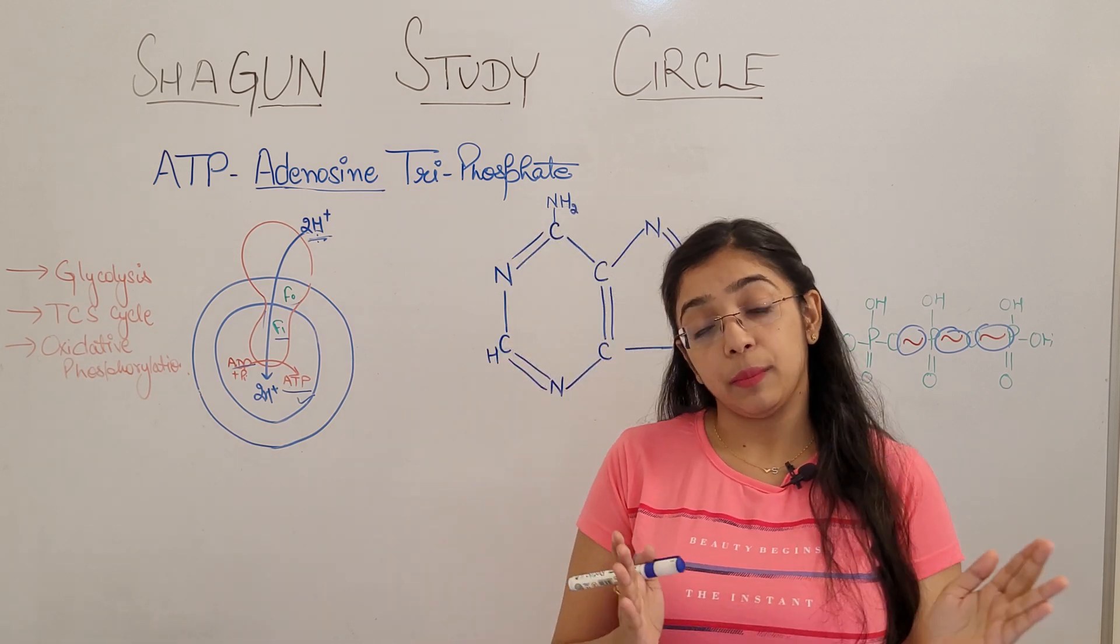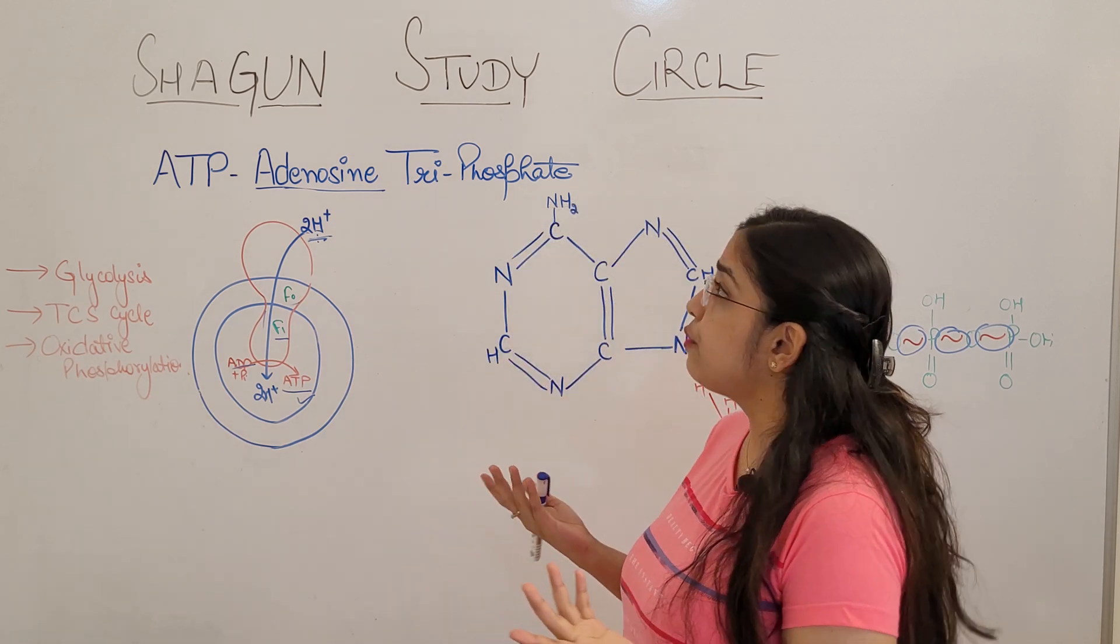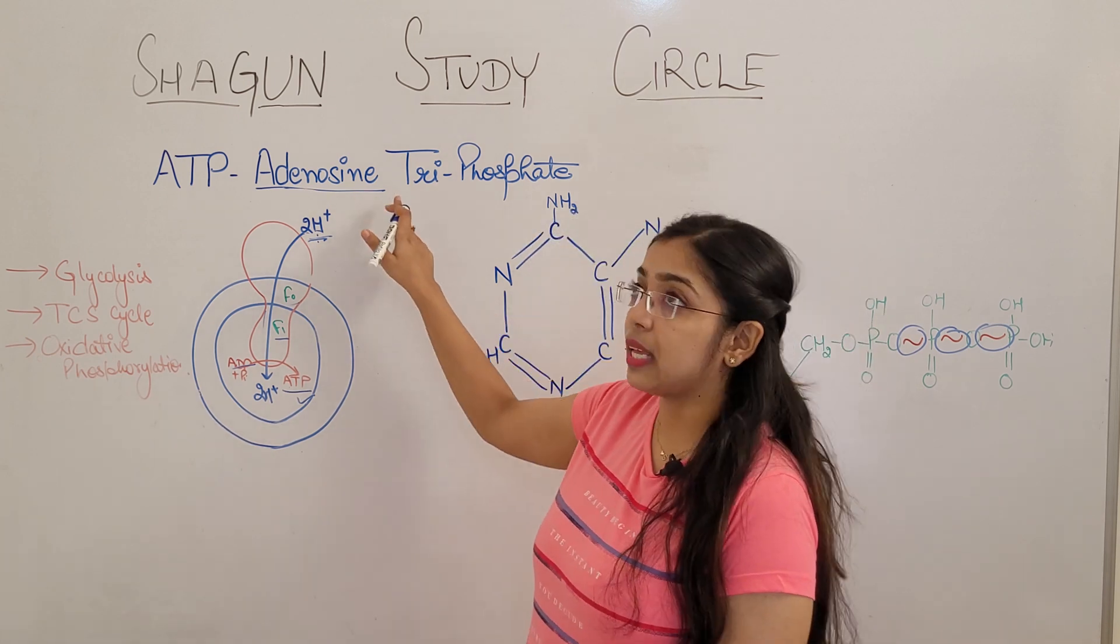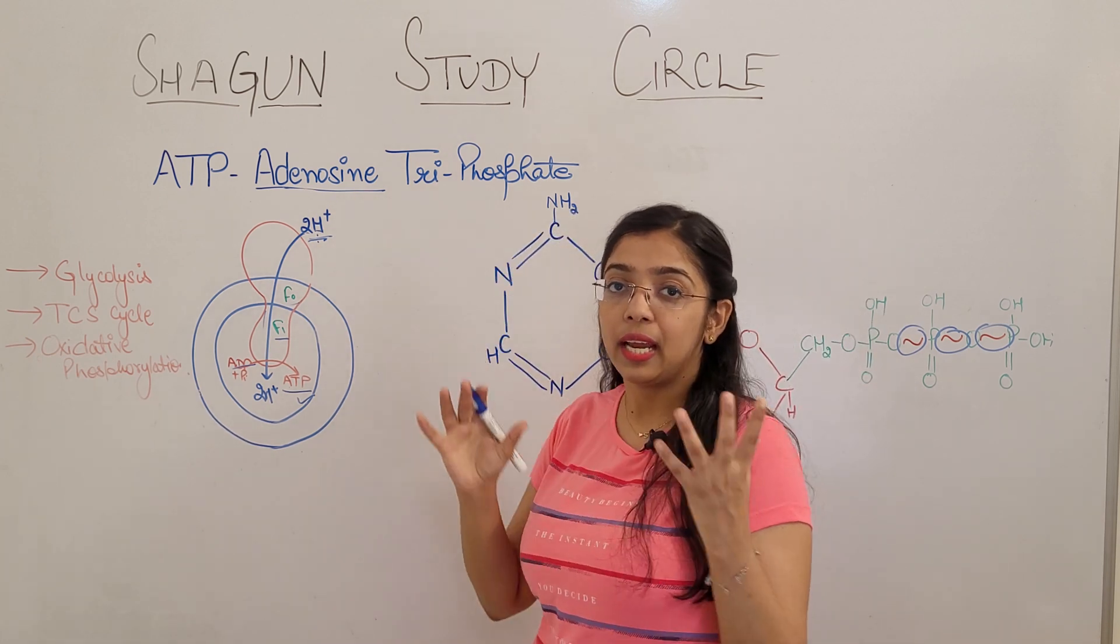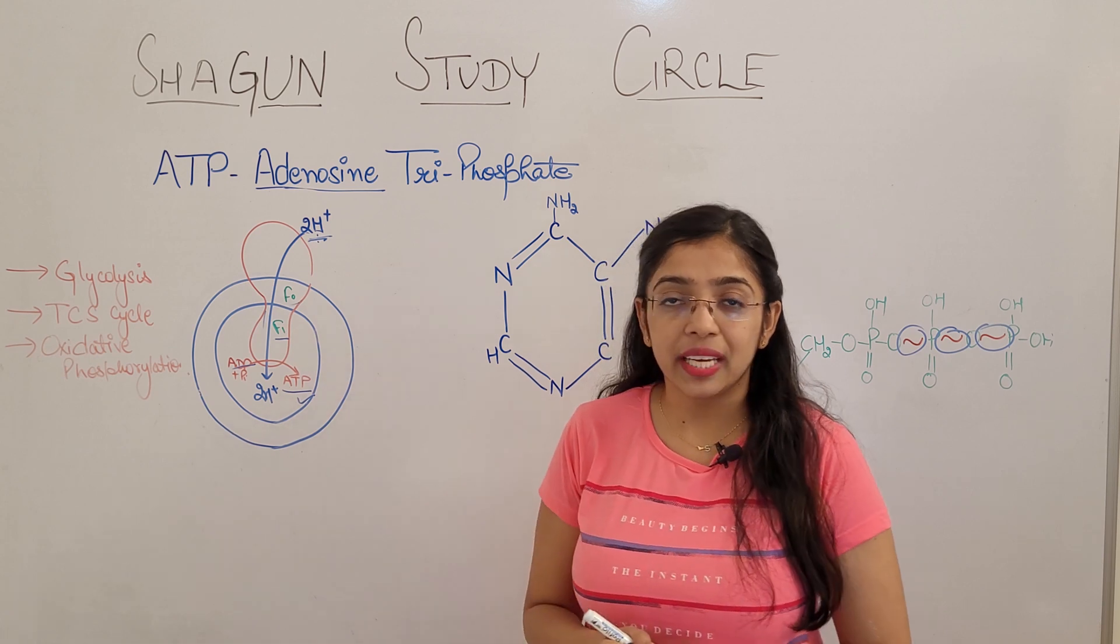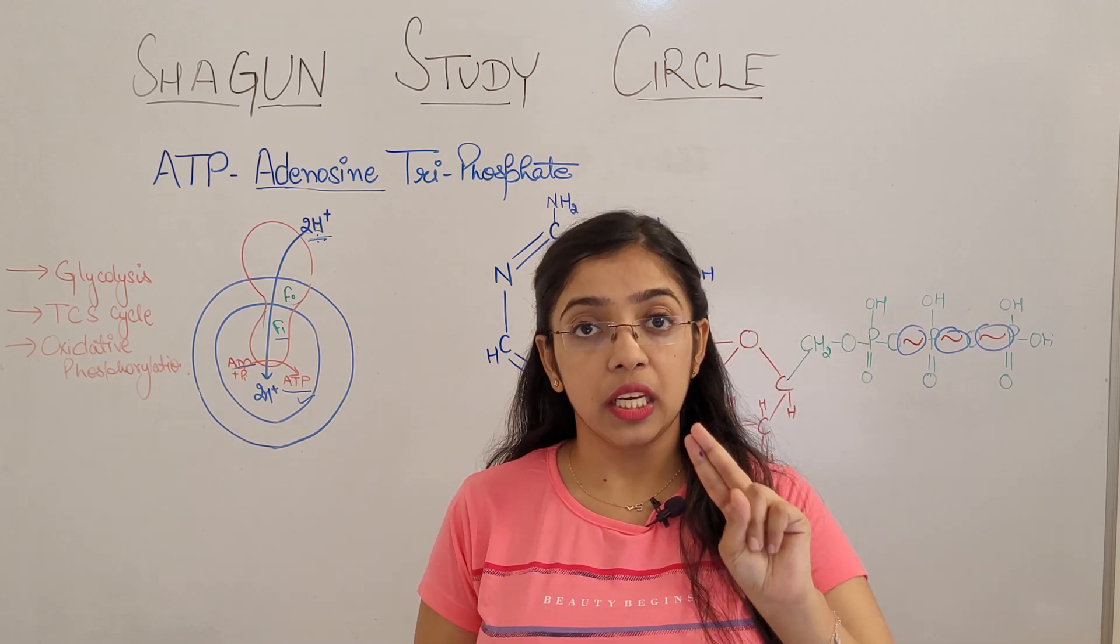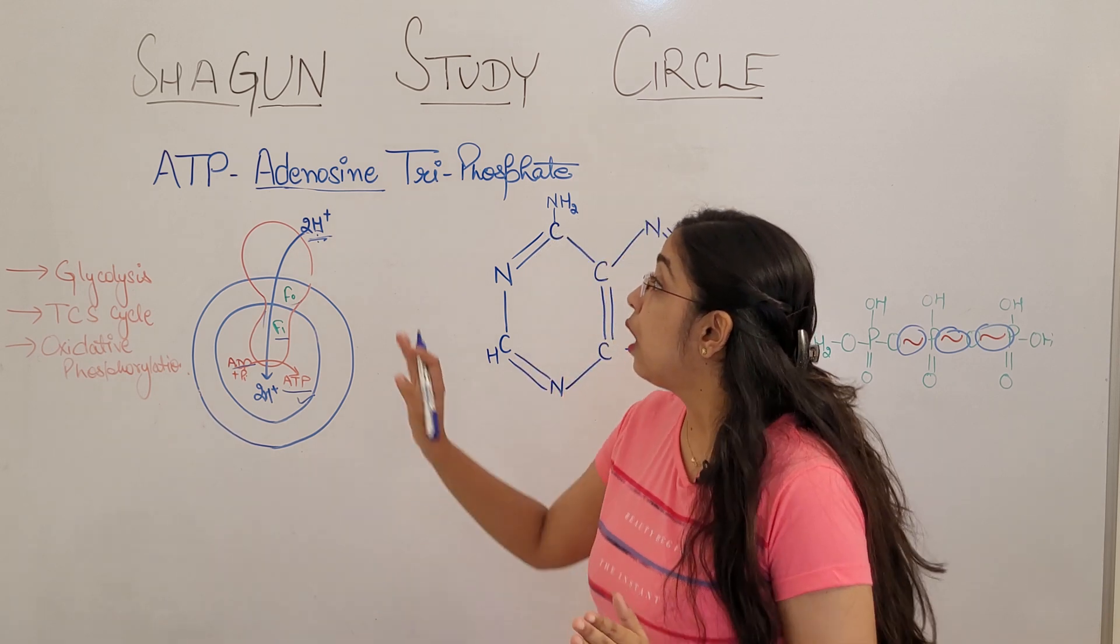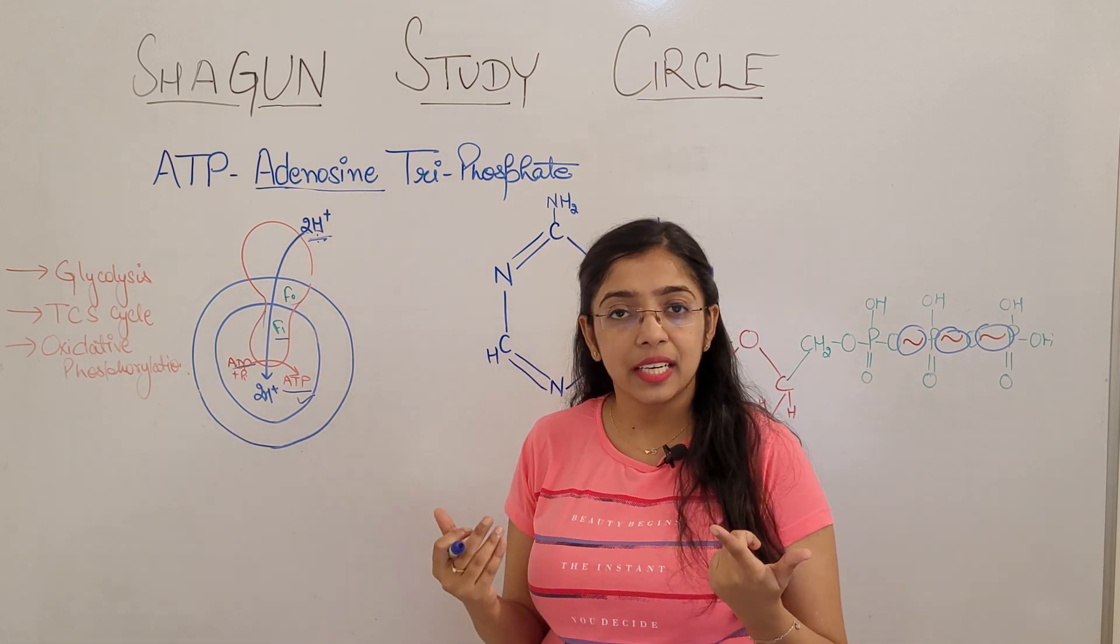Now coming to the basic thing first: what is the full form of ATP? ATP stands for adenosine triphosphate. We can easily judge that triphosphate means three phosphate molecules added. But who is adenosine? What is adenosine?